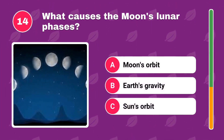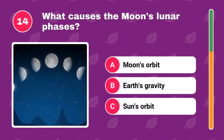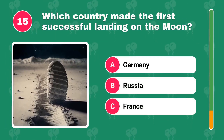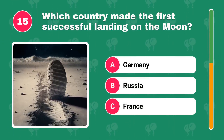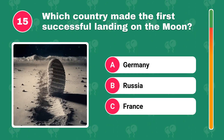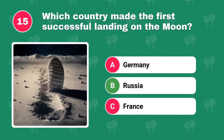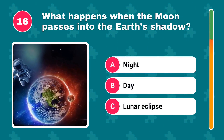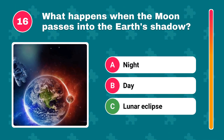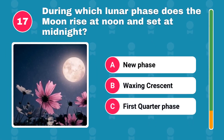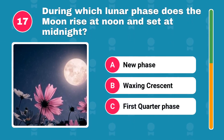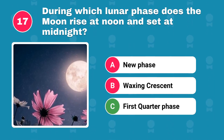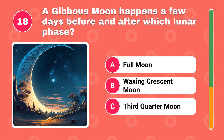What causes the moon's lunar phases? Which country made the first successful landing on the moon? What happens when the moon passes into the Earth's shadow? During which lunar phase does the moon rise at noon and set at midnight? A gibbous moon happens a few days before and after which lunar phase?